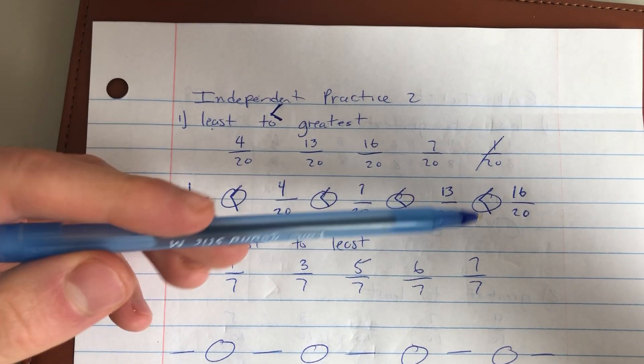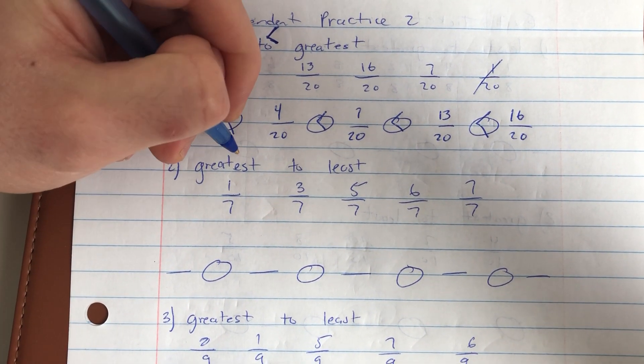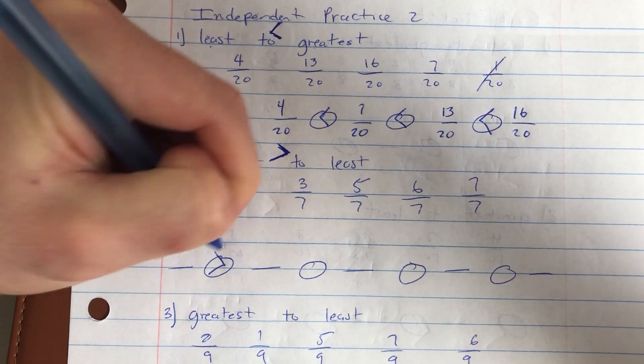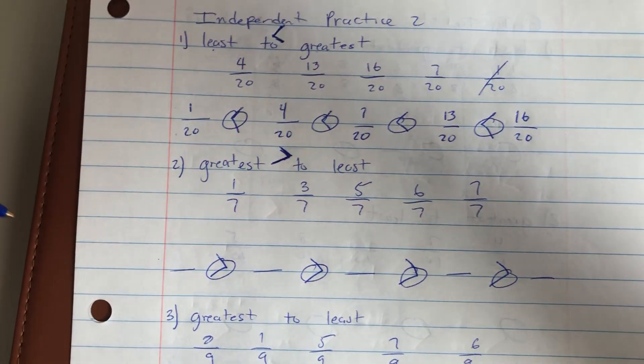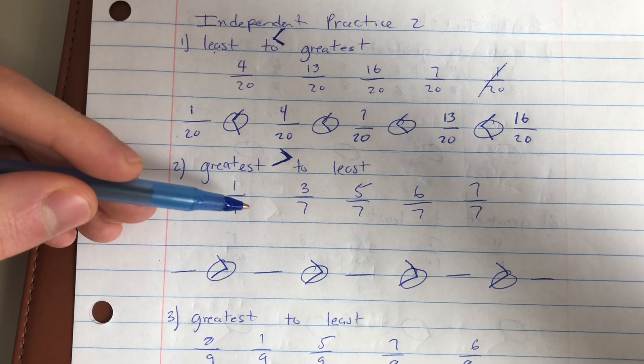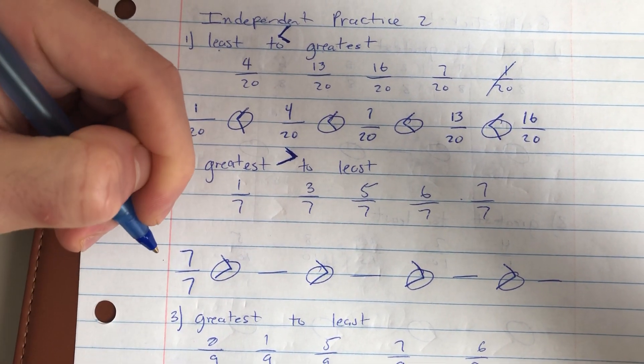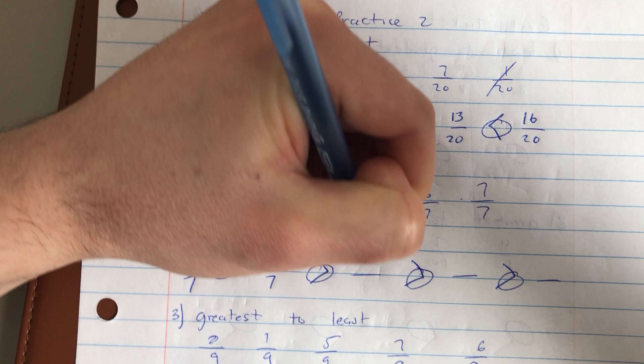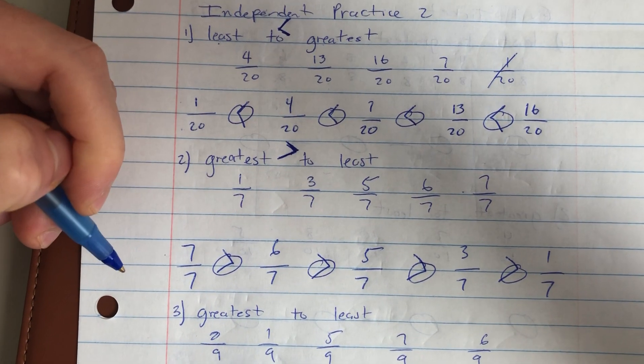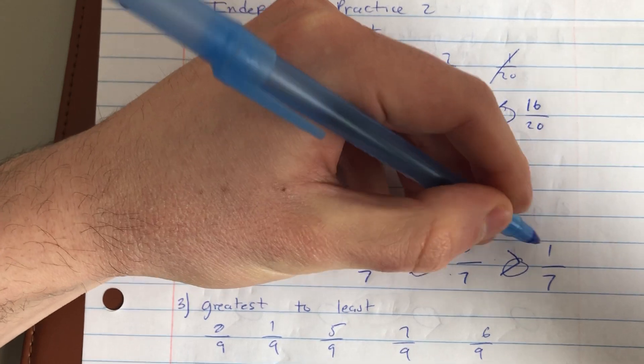For number two, I'm going from greatest to least, which means my gator is now eating the greater. So my inequality symbols are going to be facing the opposite way as they were in number one. I'm going to start now with the largest numerator since I'm looking for my largest fraction. 7/7 is my largest numerator, followed by 6/7, followed by 5/7, followed by 3/7, followed by 1/7. And it reads like this: 7/7 is greater than 6/7 is greater than 5/7 is greater than 3/7 is greater than 1/7.